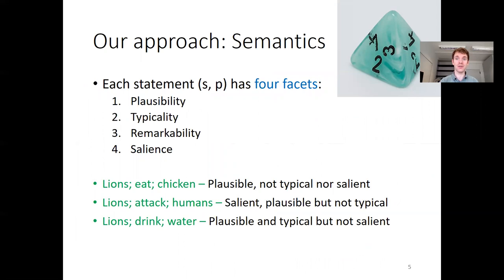That's exactly what we did. Like a four-sided die, we say that each statement has four facets: possibility, typicality, remarkability, and salience. For example, lions eating chicken is a plausible thing — it's not quite typical, nor what comes spontaneously to mind, so it's not salient. Lions attacking humans is salient and also plausible, but not quite typical, since most lions never attack any humans. And lions drinking water is very typical, but not quite salient.